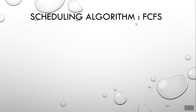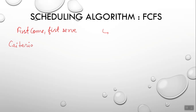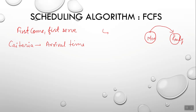In this video we are going to see the FCFS algorithm. FCFS stands for First Come First Serve — as the name says, any process that came first will execute first. The criteria of this algorithm is arrival time, which is the time when a process moves from the new state to the ready state. This algorithm works in non-preemption mode.